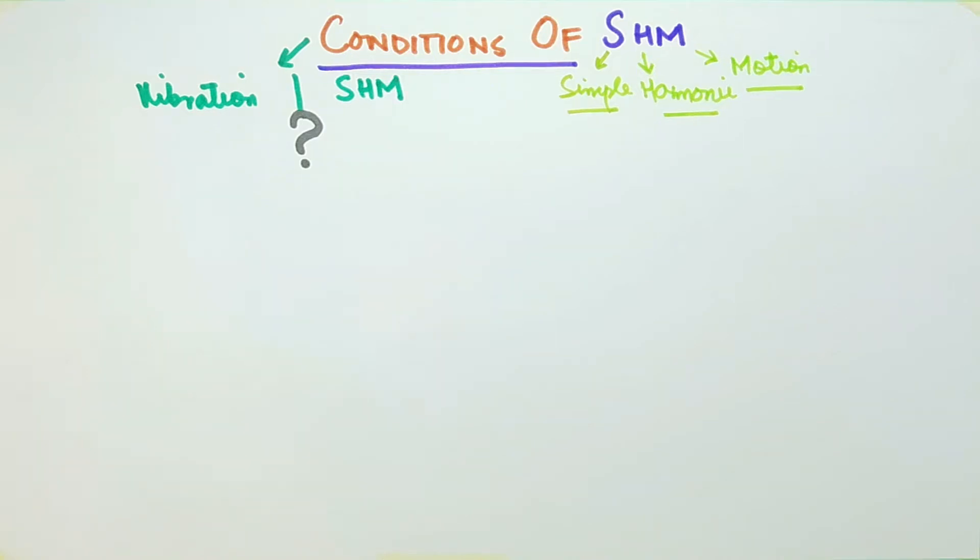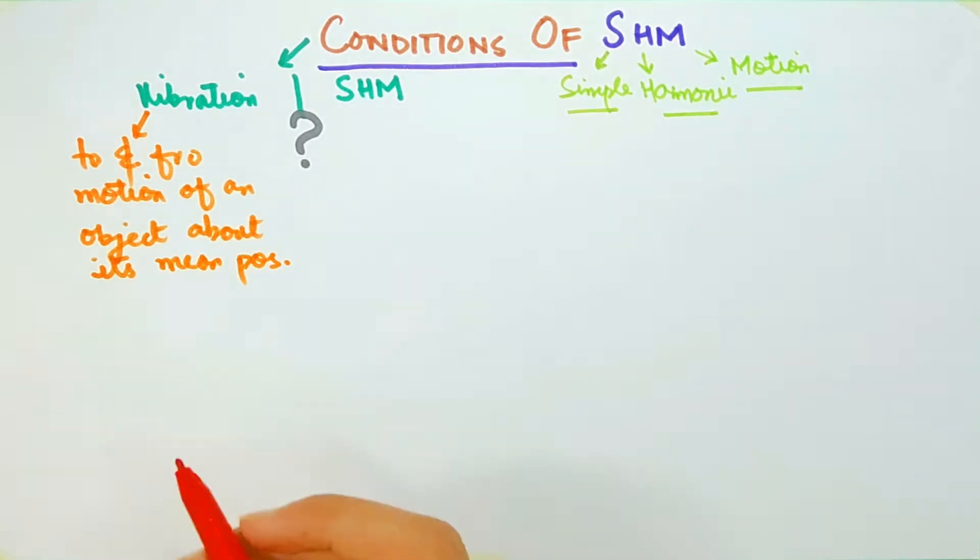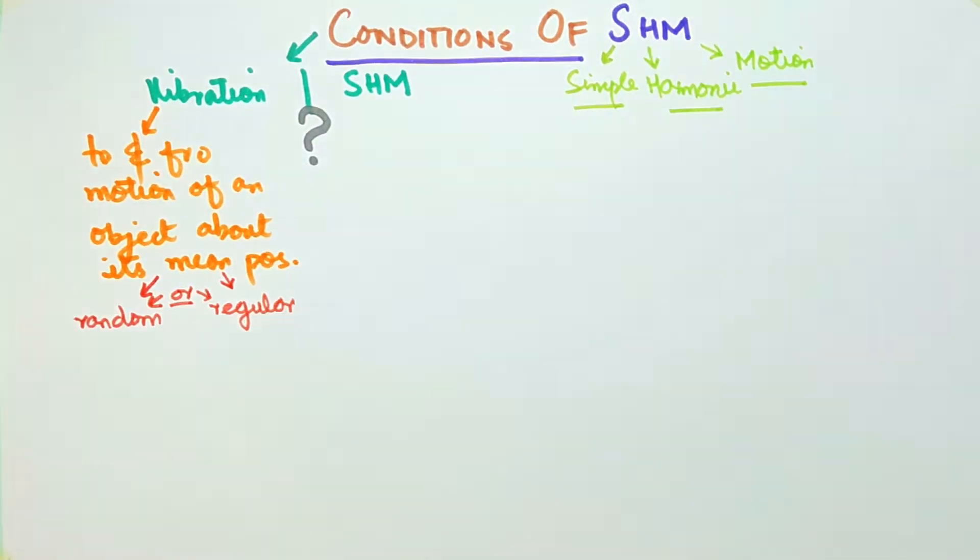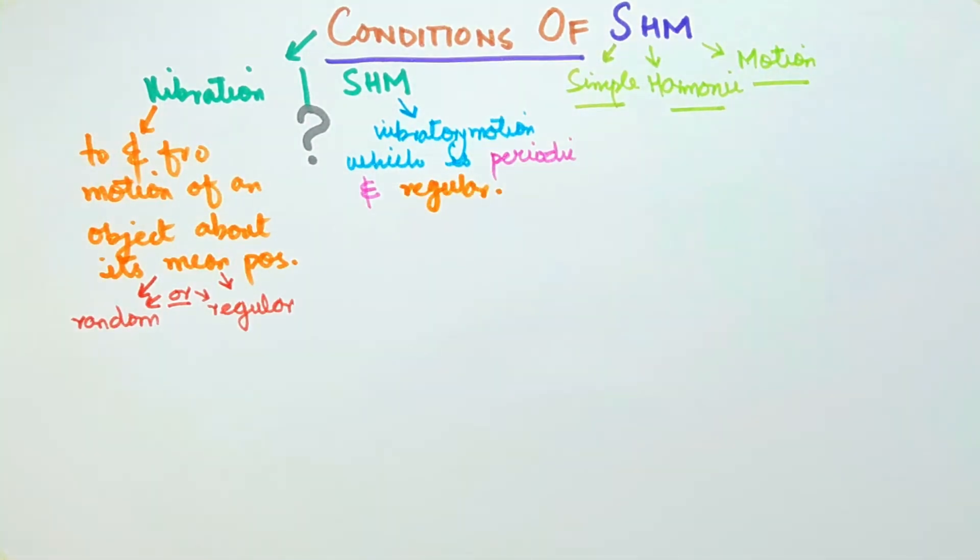Vibratory motion is to and fro motion of an object about its mean position, which may be random or regular. While simple harmonic motion is the vibratory motion which is regular and periodic in nature. This means that simple harmonic motion is a type of vibratory motion.